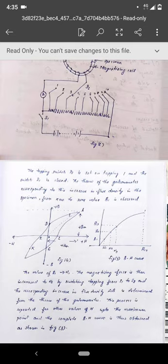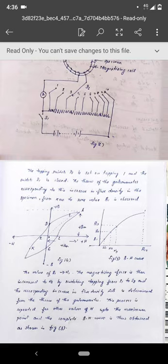A large hysteresis loop area means a large hysteresis loss. In electrical machines, one component of the constant losses is the hysteresis loss, so we always choose soft magnetic materials — materials with a very small hysteresis loop area — to keep hysteresis losses small. Soft magnetic materials are very easy to magnetize and very easy to demagnetize. In the coming lectures we will see what is a flux meter and what is a ballistic galvanometer. Thank you.